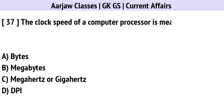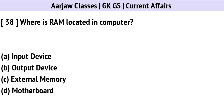The clock speed of a computer processor is measured in? The correct option is C: Megahertz or Gigahertz.